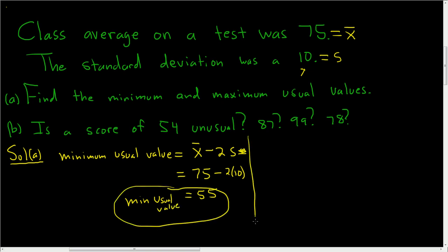The maximum usual value, the formula for that is very similar, it's the sample mean plus two standard deviations, so plus 2s. Here x-bar is 75, so we get 75 plus 2 times 10. So 75 plus 20 is 95, that's the max usual value.